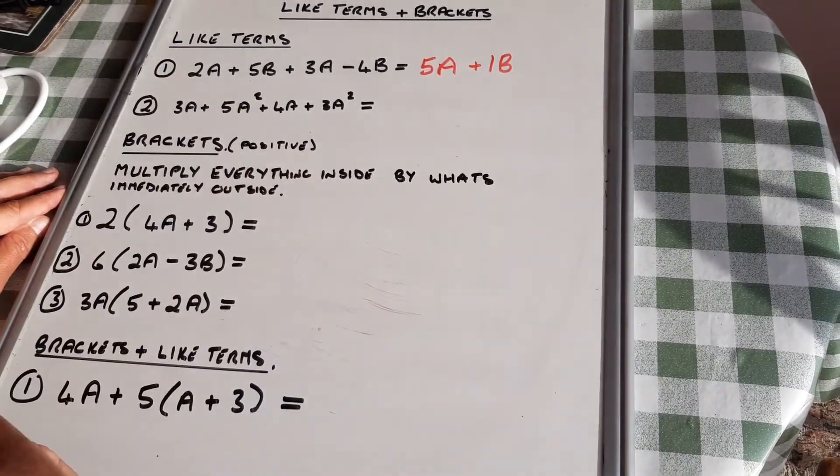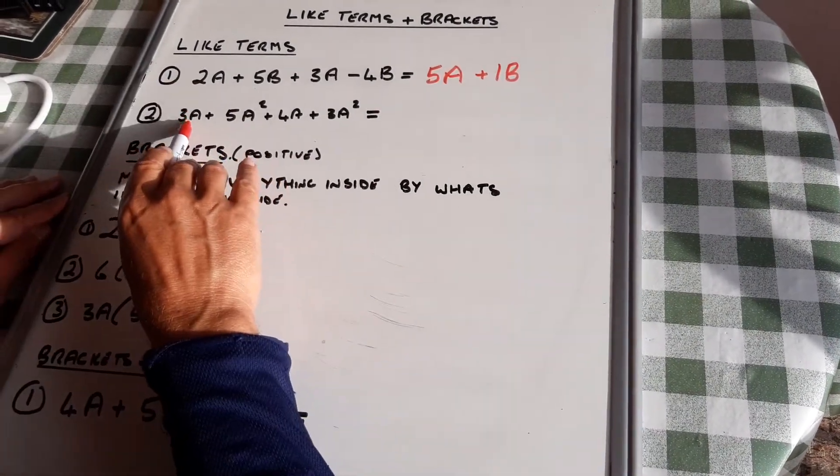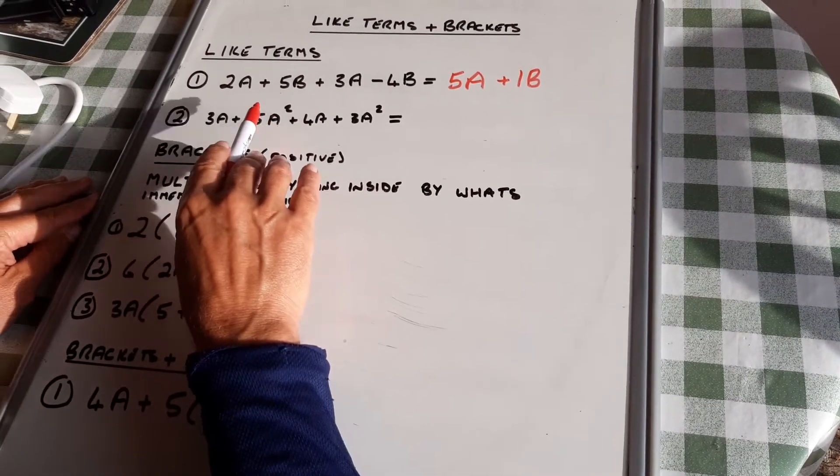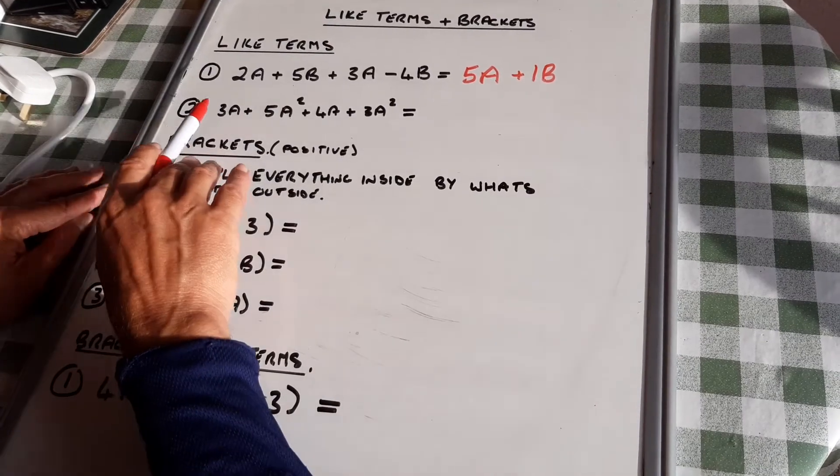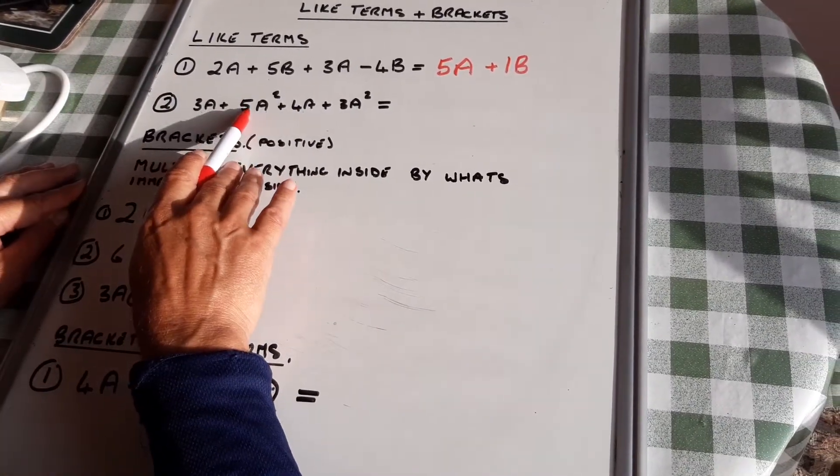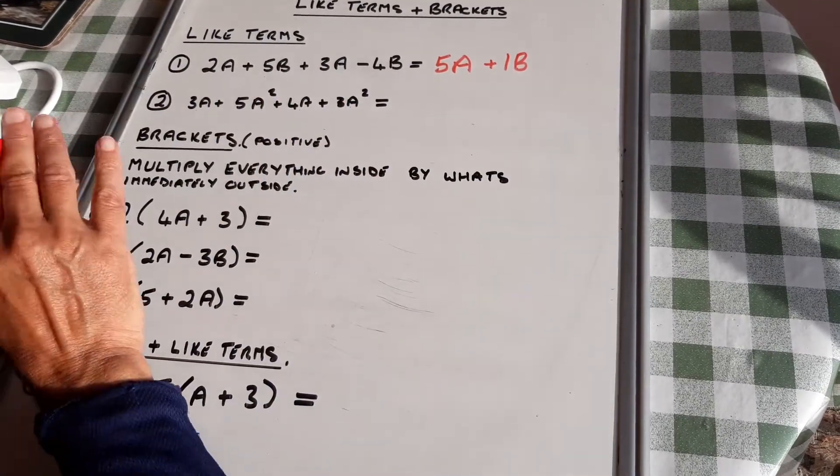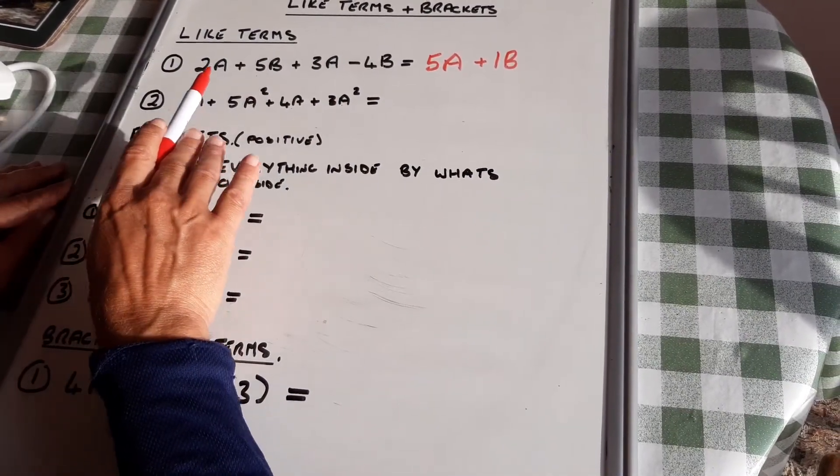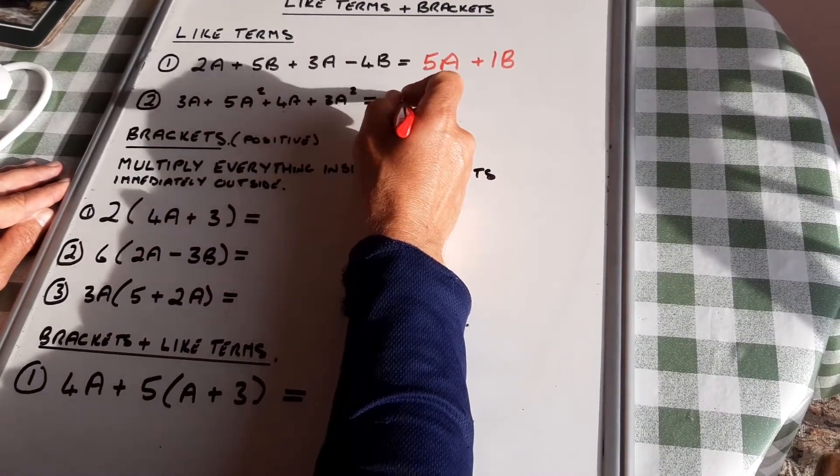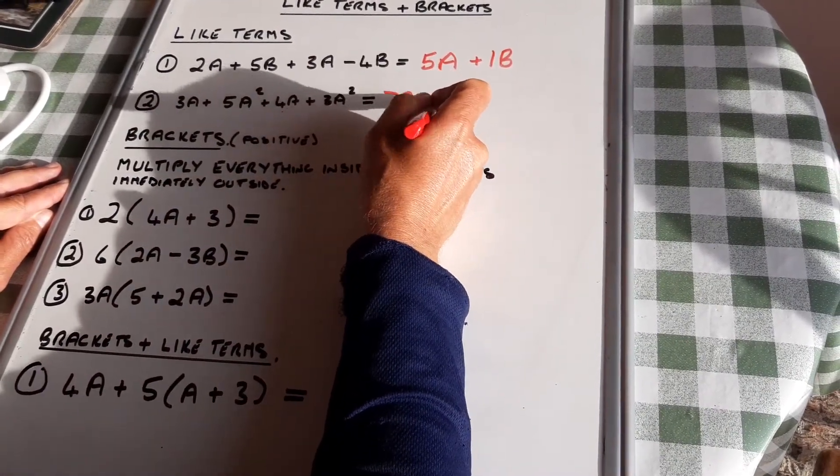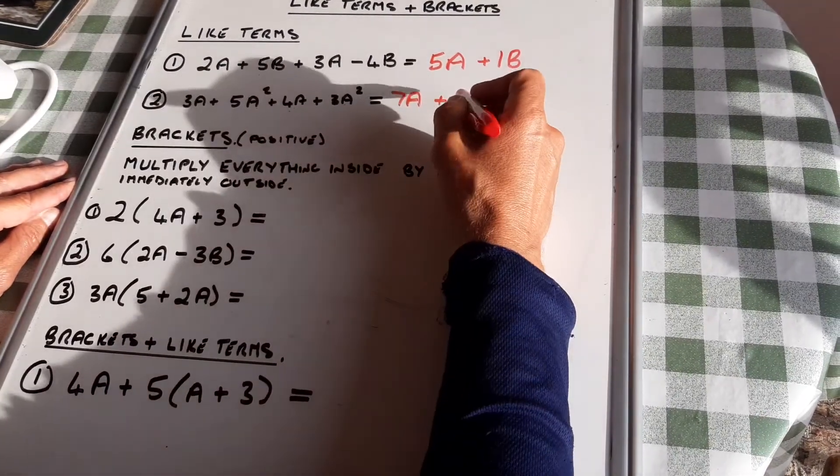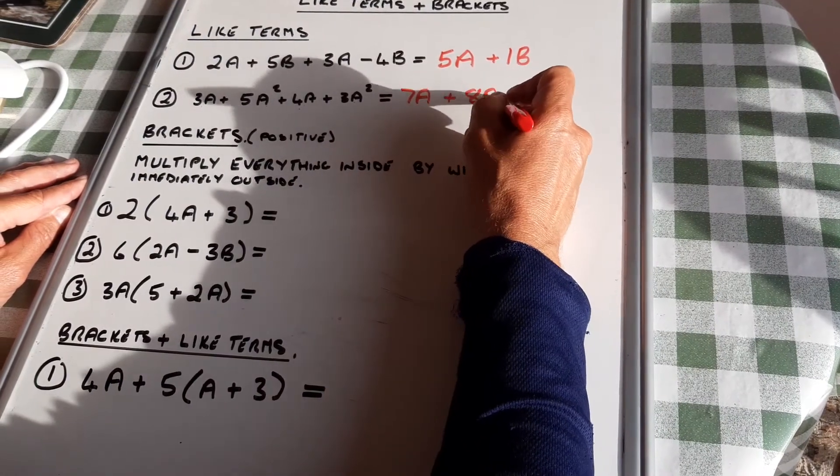We didn't do these last lesson. We've got a and a squared. That is a completely different term from a. So I need to add the a's together and add the a squareds together. So 3a add 4a is 7a. 5a squared add 3a squared is 8a squared.